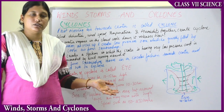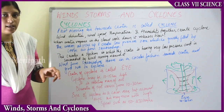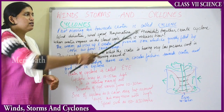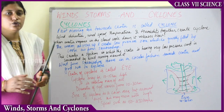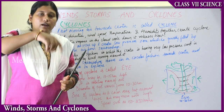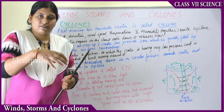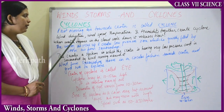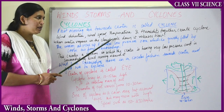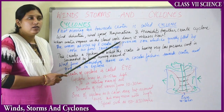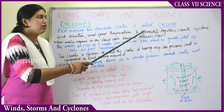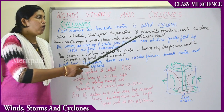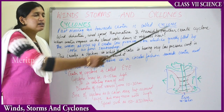How does a cyclone occur? Fast moving air revolving towards a specific center is called a cyclone. Wind direction, wind speed, temperature, and humidity — which is the moisture content in the atmosphere — all these factors together create a cyclone.